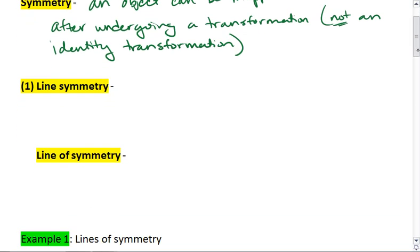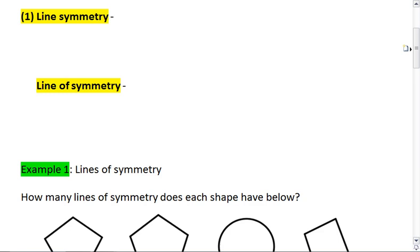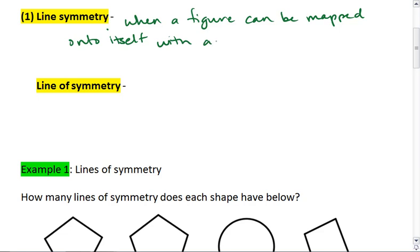We're going to look at two types of symmetries. We're going to look at line symmetry, which is when a figure can be mapped onto itself with a reflection. And the line of symmetry is the line of reflection in a line symmetry.